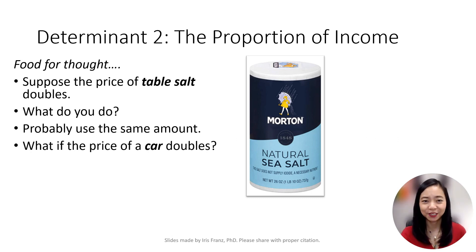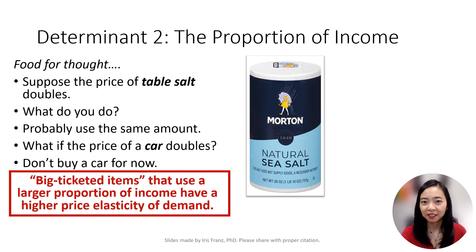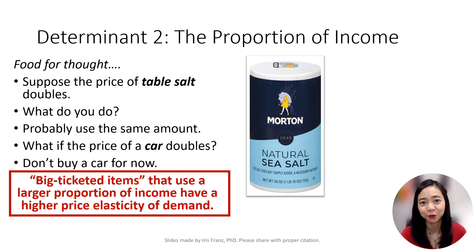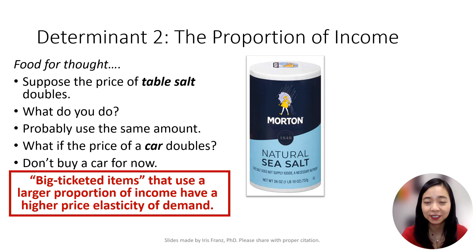What if the price of cars doubles? Maybe you would choose not to buy a car for now, because cars are so expensive. So you get it — big ticket items that use a bigger proportion of your income will have a relatively elastic demand, while cheap items that use only a tiny proportion of your income have a relatively inelastic demand.